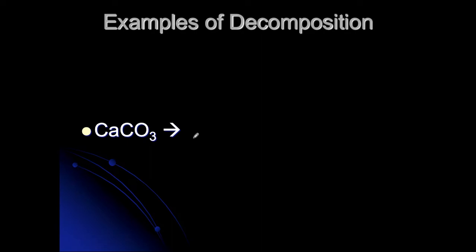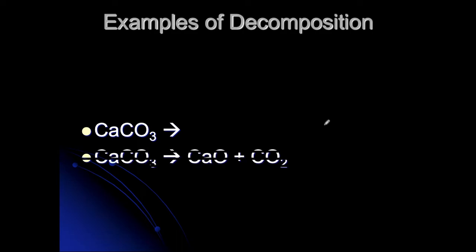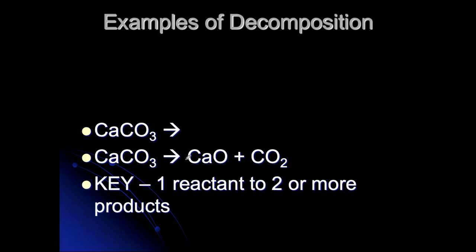If you were predicting on your own, you would just break it into its elements. But calcium carbonate, which is found in chalk, when it breaks down, it breaks down into calcium oxide — another compound — and carbon dioxide gas. That carbon dioxide gas is what is released, or you will see bubbling when calcium carbonate breaks down. This is already balanced. The key to decomposition is you will see one reactant.